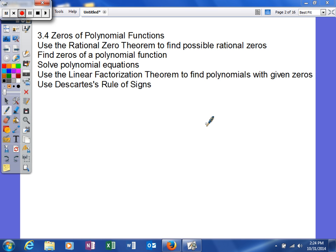We're going to learn how to use the rational zero theorem to find rational zeros. We're going to find zeros of a polynomial function, solve polynomial equations, use linear factorization theorem to find polynomials with given zeros, and use Descartes' rule of signs.